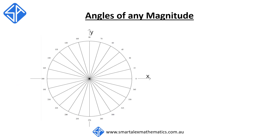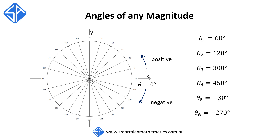Before we get started, we need to understand how to locate different sized angles on the circle. Unlike true bearings, where we begin at north and rotate clockwise, for trigonometric functions the positive horizontal x-axis is the starting point, and that's where theta begins at 0 degrees. Rotation in the anticlockwise direction is deemed to be positive, and rotation in the clockwise direction is deemed to be negative. So let's look at how to locate the following angles on the circle.